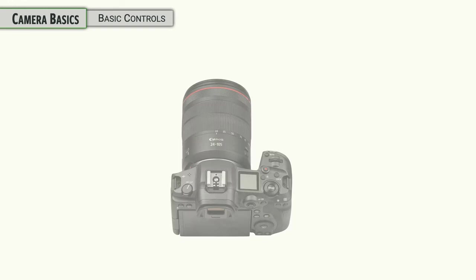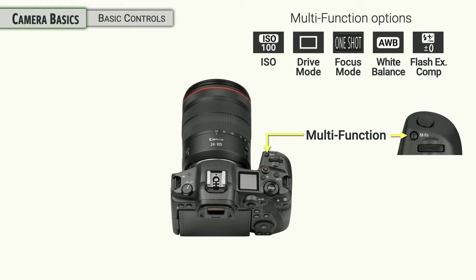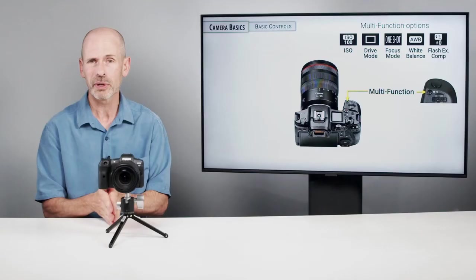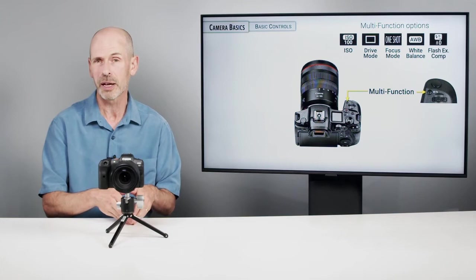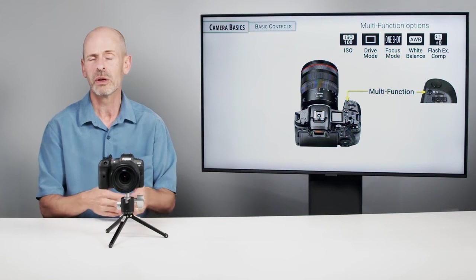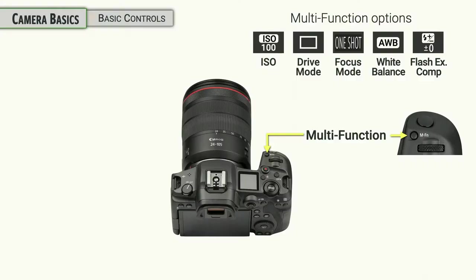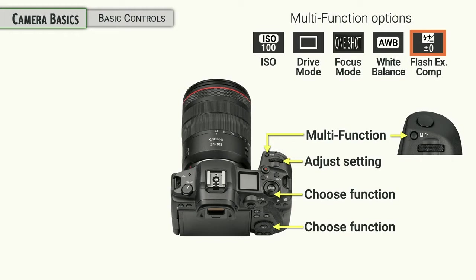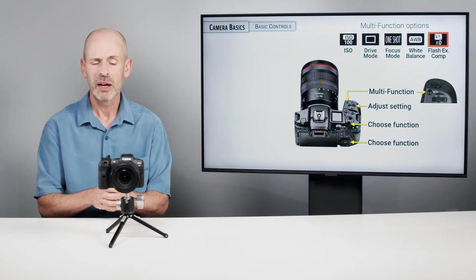All right, a button that we're going to talk a lot about in this class is the multi-function button up towards the front of the camera. This is a button that obviously controls multiple functions. Now, there's a lot of different ways to program this. And I'm going to talk about some very innovative ways to reprogram this later on when we get to the custom settings in the class. But it's a button that we're going to be coming back to on a regular basis. Right now, Canon has put in five of what they think are the most important functions that you can use. So what you would do is you press the multi-function button and then you can turn that mode dial for choosing which function you want. You can also turn the back dial on there as well. And then when you want to adjust that setting, you turn that front dial on the camera, the main dial for choosing a different mode.